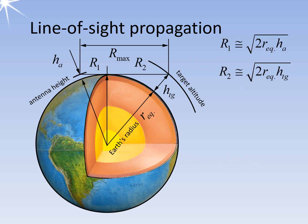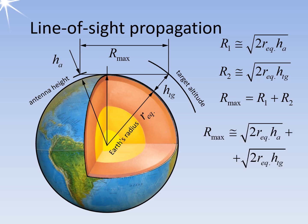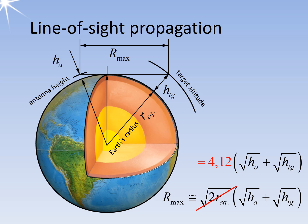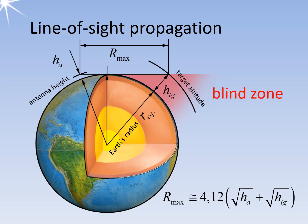The second part of the distance differs from the first only in that the antenna height is replaced by the height of the target. The maximum detection range for a target with a given height is the sum of both partial sections. Replacing both subsections with their root expressions and placing the constant equivalent earth's radius outside a bracket, the expression simplifies to a constant factor. With four-thirds of the mean radius of the earth — approximately 6,371 km — giving about 8,494 km, a rounded value of 8,500 km can be used. Targets that do not reach the required height are in a blind zone; at 240 kilometers, anything flying lower than 3,000 meters is invisible to normal radar.